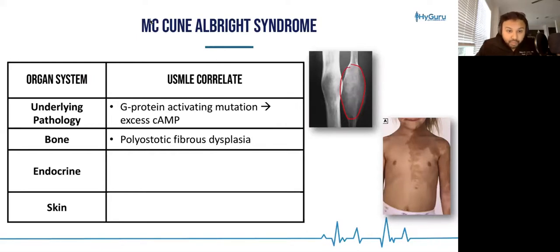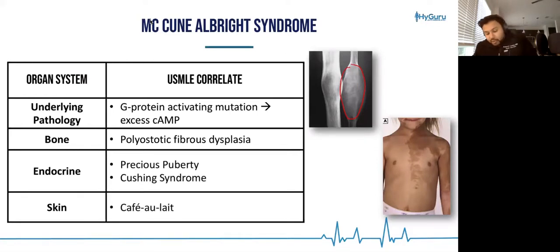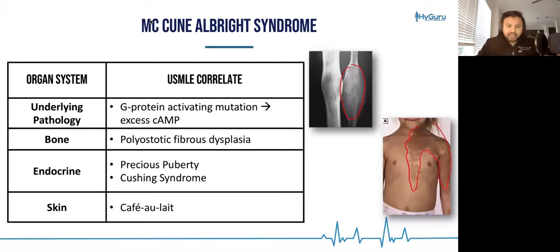From an endocrine standpoint, a defining feature of McCune-Albright syndrome is precocious puberty, as well as Cushing syndrome. And from a skin standpoint, you have this really big café au lait spot — what they call the coast of Maine café au lait spot.